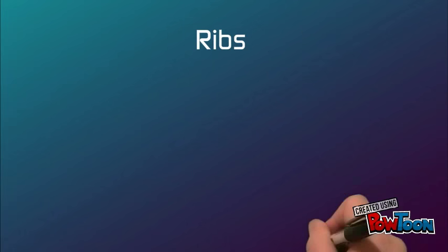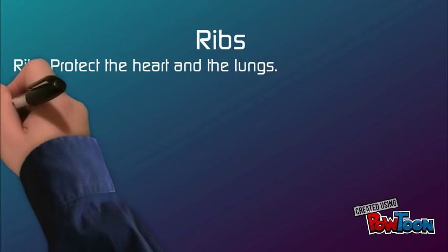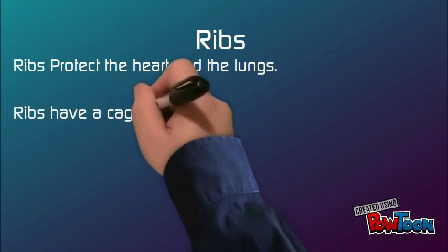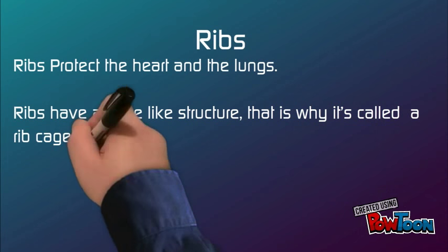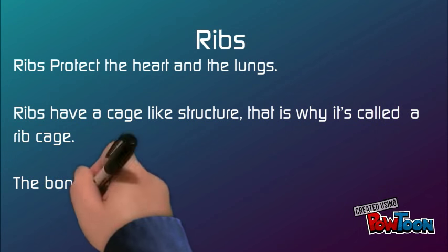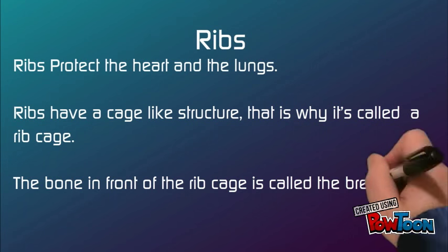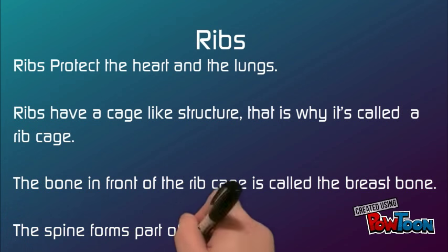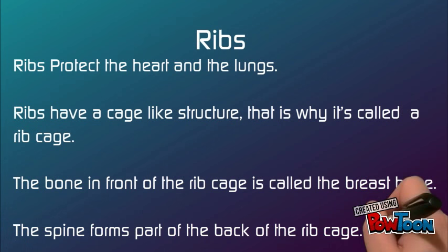Ribs. Ribs protect the heart and the lungs. Ribs have a cage-like structure, that is why it's called a ribcage. The bone in front of the ribcage is called the breastbone. The spine forms part of the back of the ribcage.